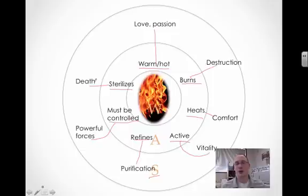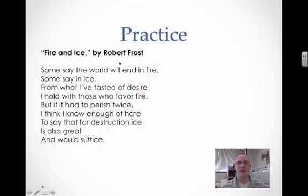So we have so far covered our objectives. We have defined symbolism. We've learned how to identify and interpret it. Now I want you to practice it a bit. And I've given you a poem here, Fire and Ice by Robert Frost.